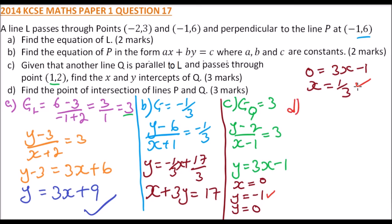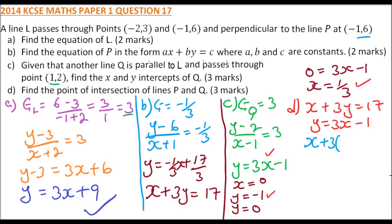Part d: find the point of intersection of p and q. The equation of line p is x plus 3y equals 17, and the equation of line q is y equals 3x minus 1. Since the values of x and y are equal at the intersection, we substitute y in the first equation: x plus 3 times 3x minus 1 equals 17.